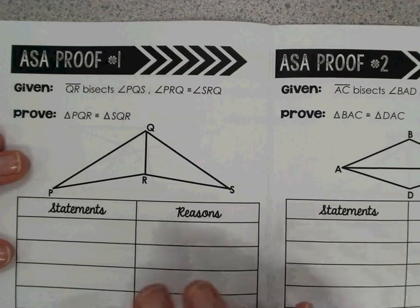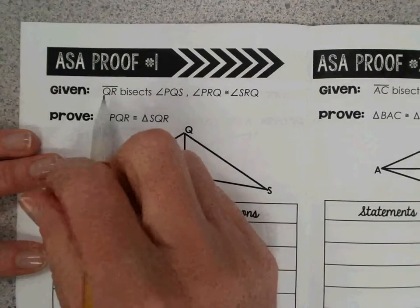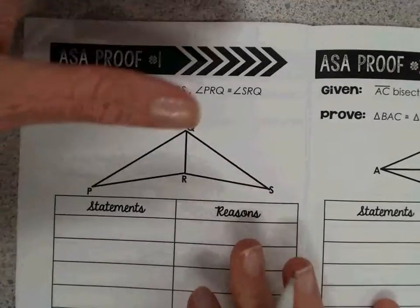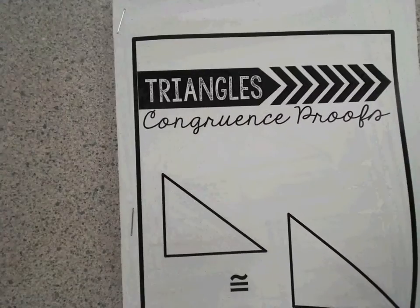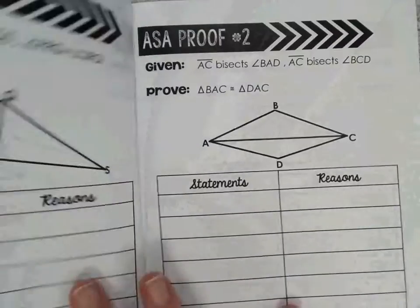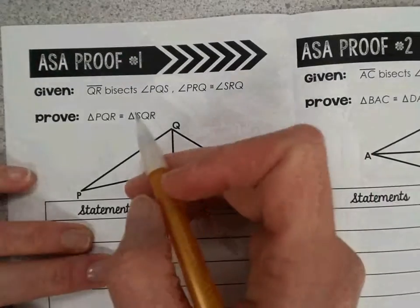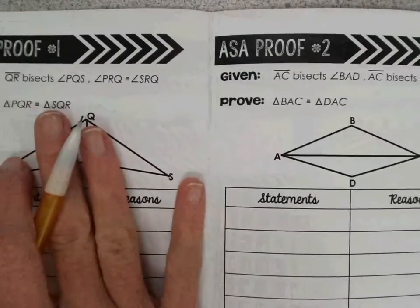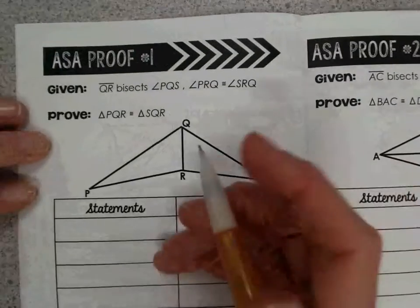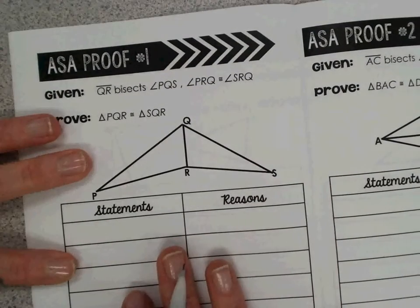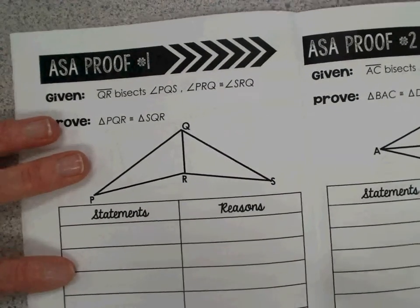We're looking at the angle side angle proof number one in our triangles congruence proofs booklet. I'll be doing the first example and have you do the second on your own. If you feel like you can do this on your own, feel free to skip this video and try it independently and come back and check.